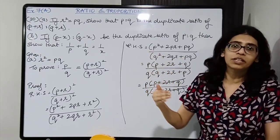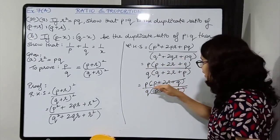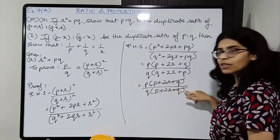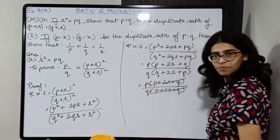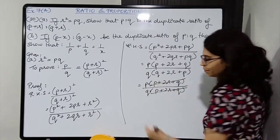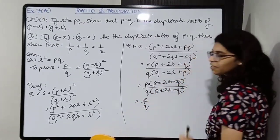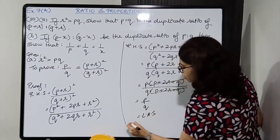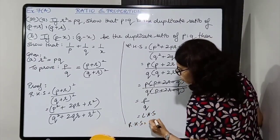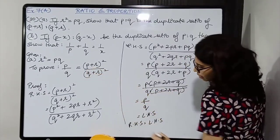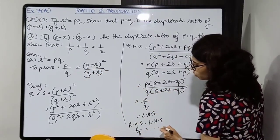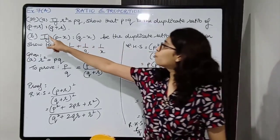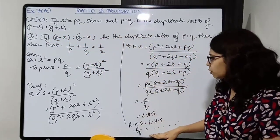Now group the X terms on one side and the remaining terms on the other. Shift P squared X positive and keep Q squared X negative: P squared X minus Q squared X equals P squared Q minus PQ squared. Take X common from the left: X into P squared minus Q squared.